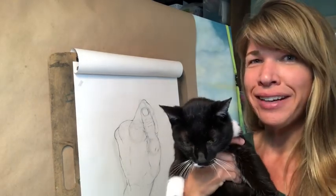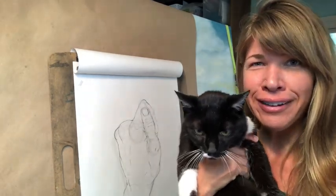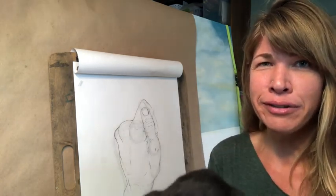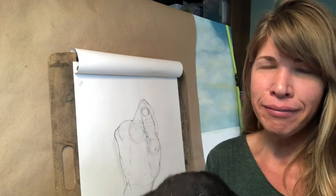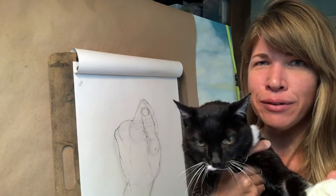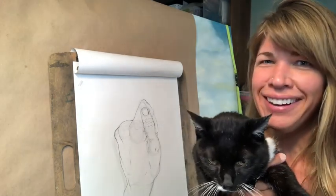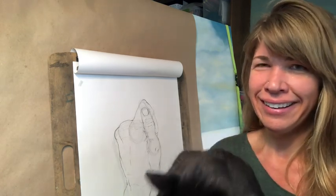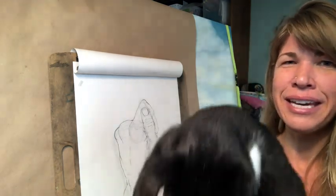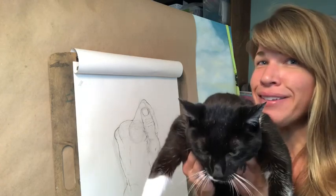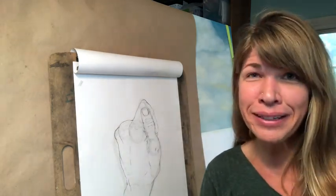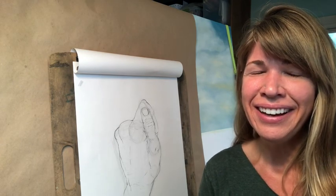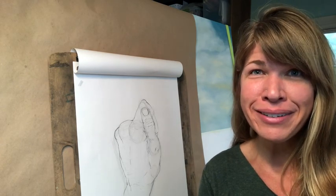We're going to consider this cat the mascot for our class — he came in during our drawing time. You heard Jim Jim earlier, and this is Thumbs. I thought I'd go ahead and introduce him so you guys can be thinking about what's going on in my studio. Maybe you have some equal enjoyment in your studio. Alright guys, I'll talk to you soon — happy week, happy drawing.